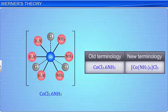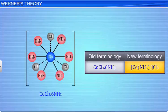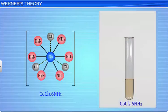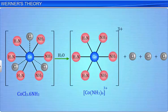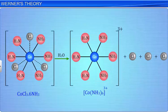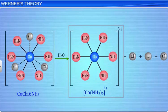In modern terms, the complex is written as [Co(NH3)6]Cl3. The 3 chloride ions are ionic and hence are precipitated as silver chloride by silver nitrate. Thus, the complex will ionize in solution and give 4 ions: 1 [Co(NH3)6]3+ ion and 3 chloride ions.